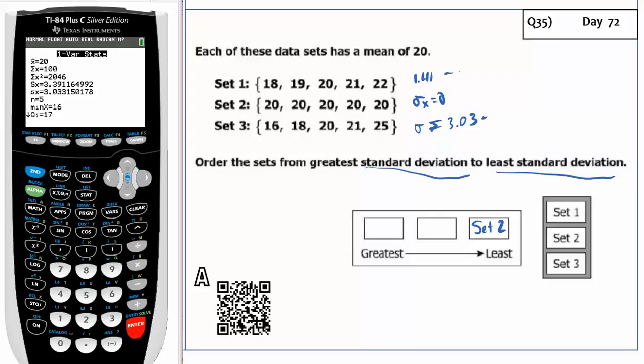So here's greatest, second, and least. So it should be Set 3, Set 1, and Set 2. And on the SOL, if it's not in this order perfectly, then it won't count it correct.